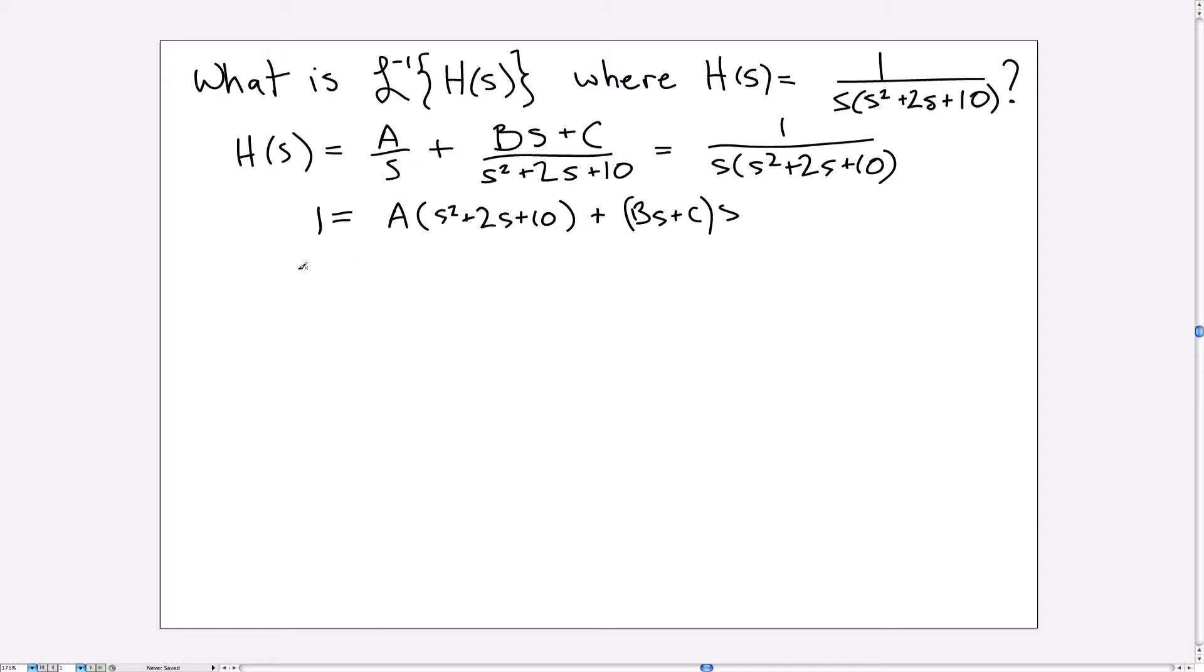So we can group this. The coefficients of S² will be A and B from over here, multiplied by S². And then the coefficients on the S term, there's two, 2A plus C, multiplying the S, and now the constant term, that I believe there's only one, 10A.